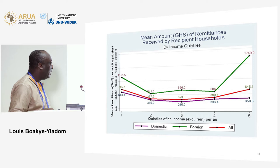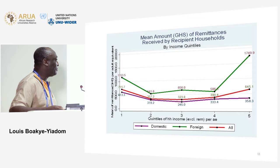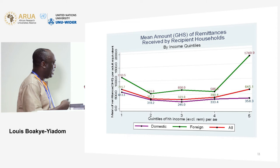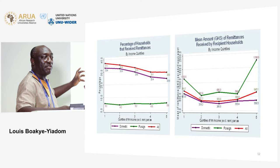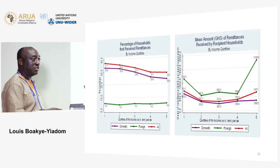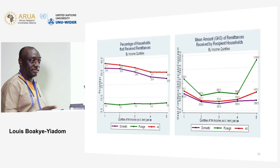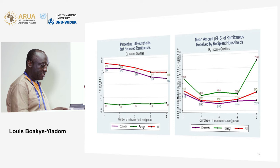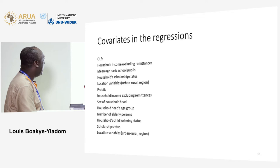This is a similar chart for the mean amount of remittances received across quintiles. We can see that there is essentially a reversal: when it comes to the mean amount of remittances received, it is the receipt of international remittances that is most important, whereas when it comes to percentages, it is the receipt of domestic remittances that dominates.